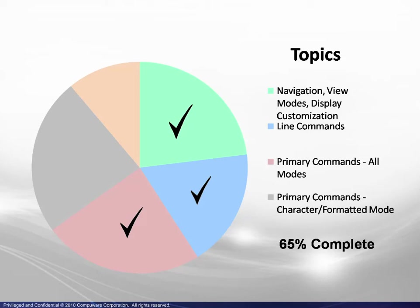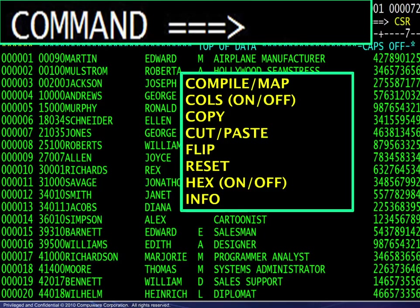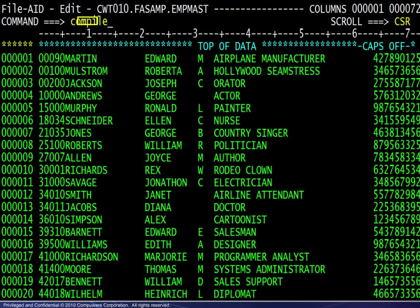You have completed another section, so you have completed about 65% of the module. Now we will review the primary commands that are available in character mode. Here is a list of the commands — we will look at examples of each.